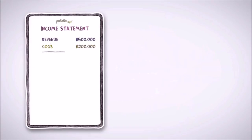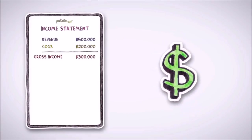Revenue minus COGS is known as gross income. Think of this as money made from both growing and selling flowers.